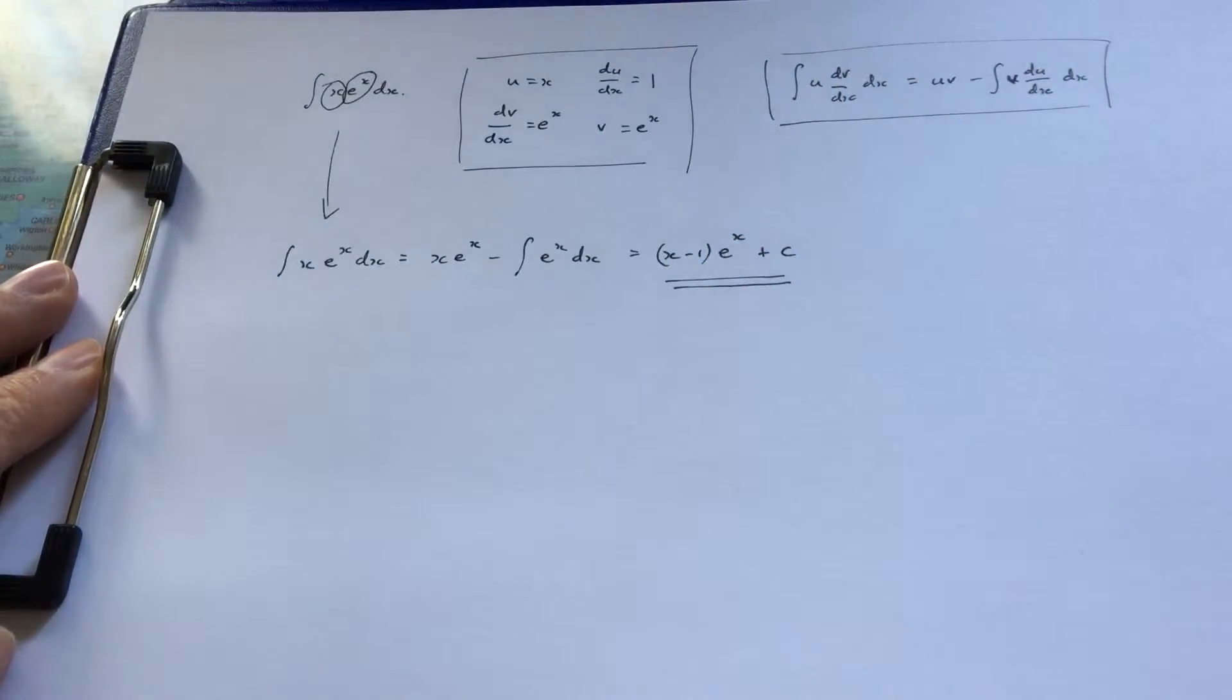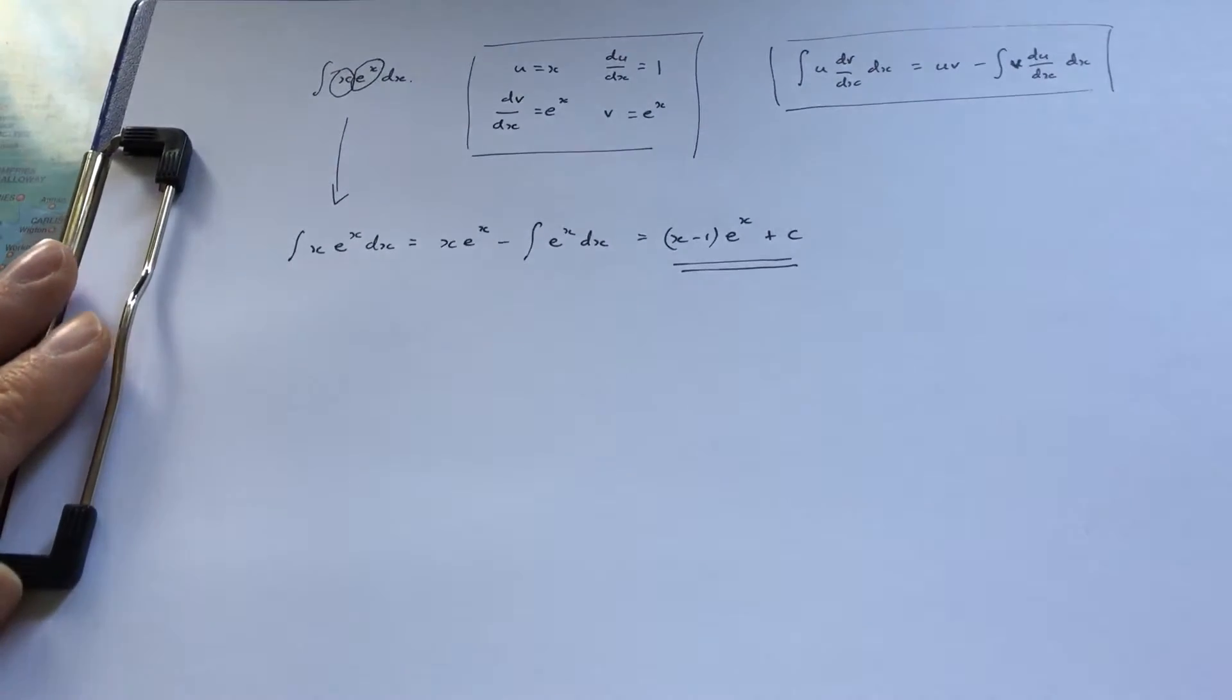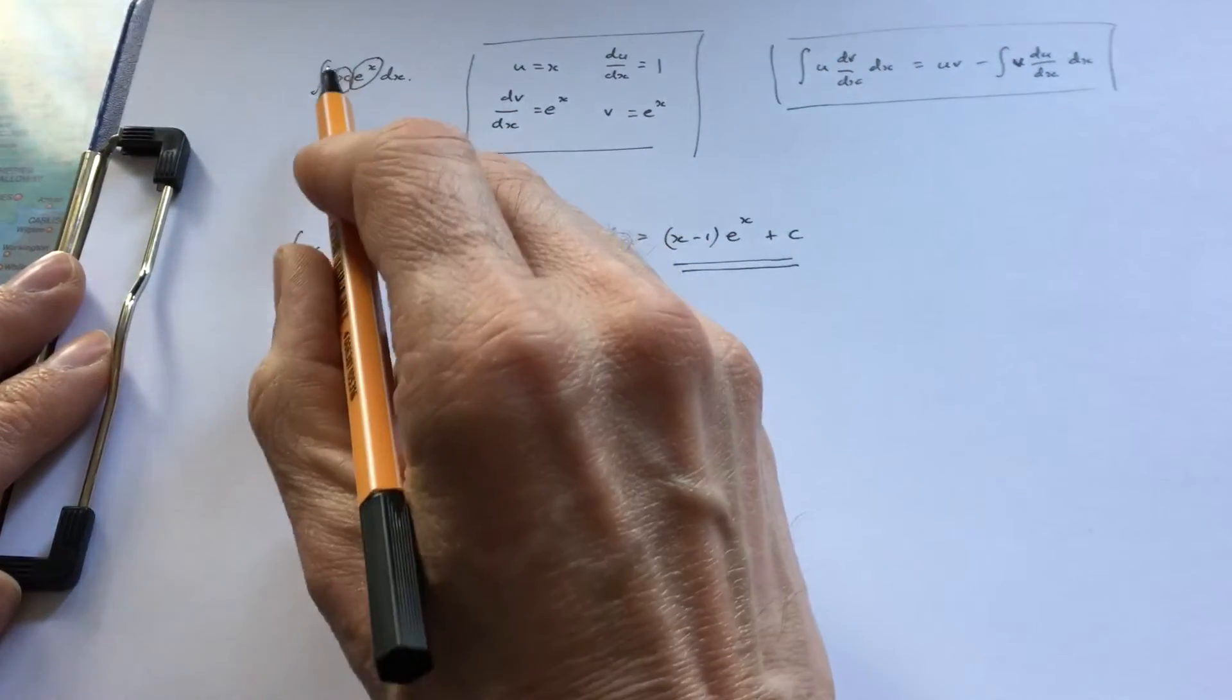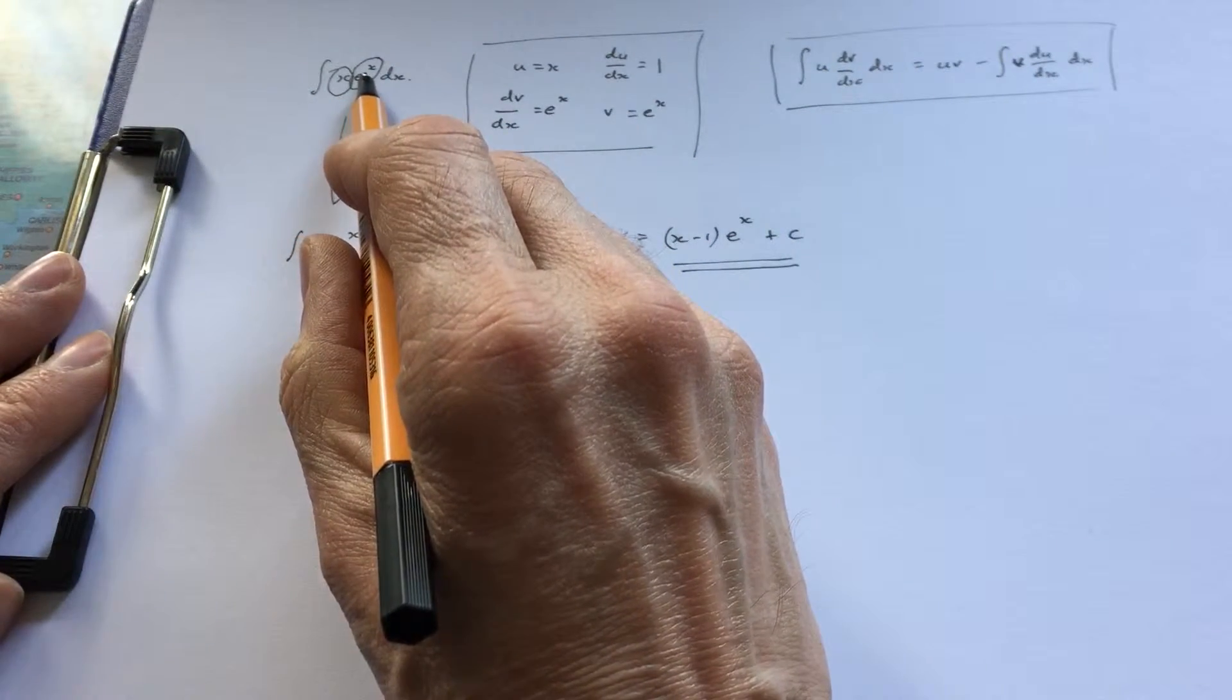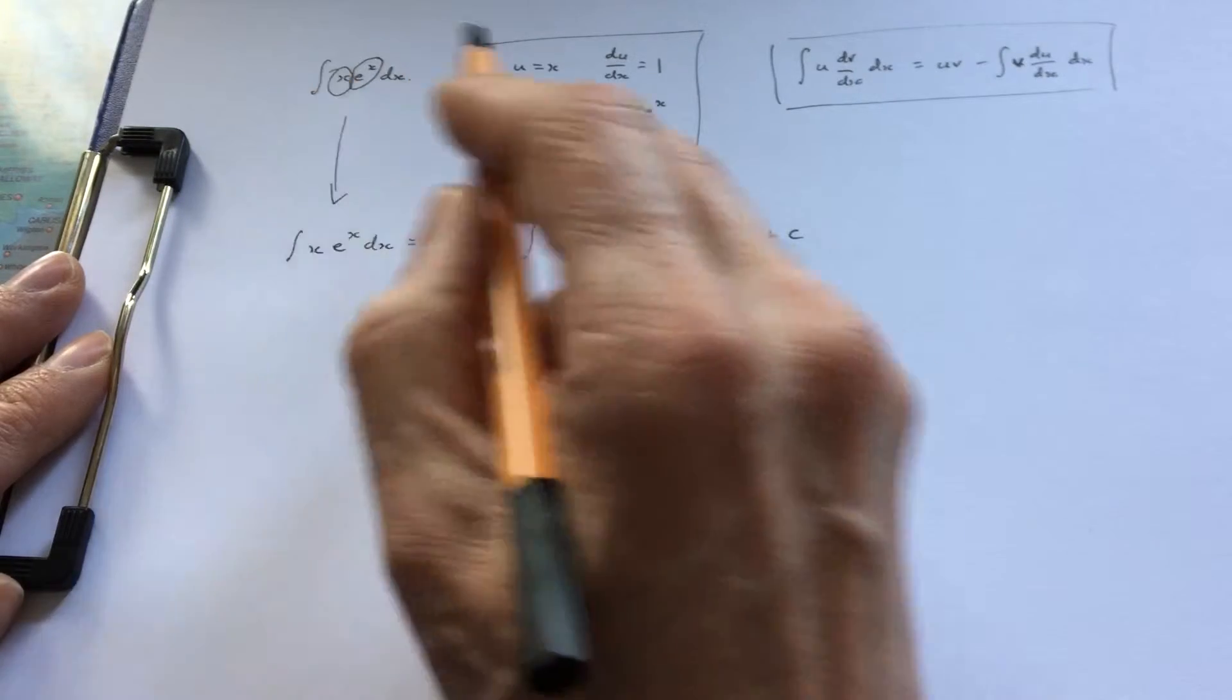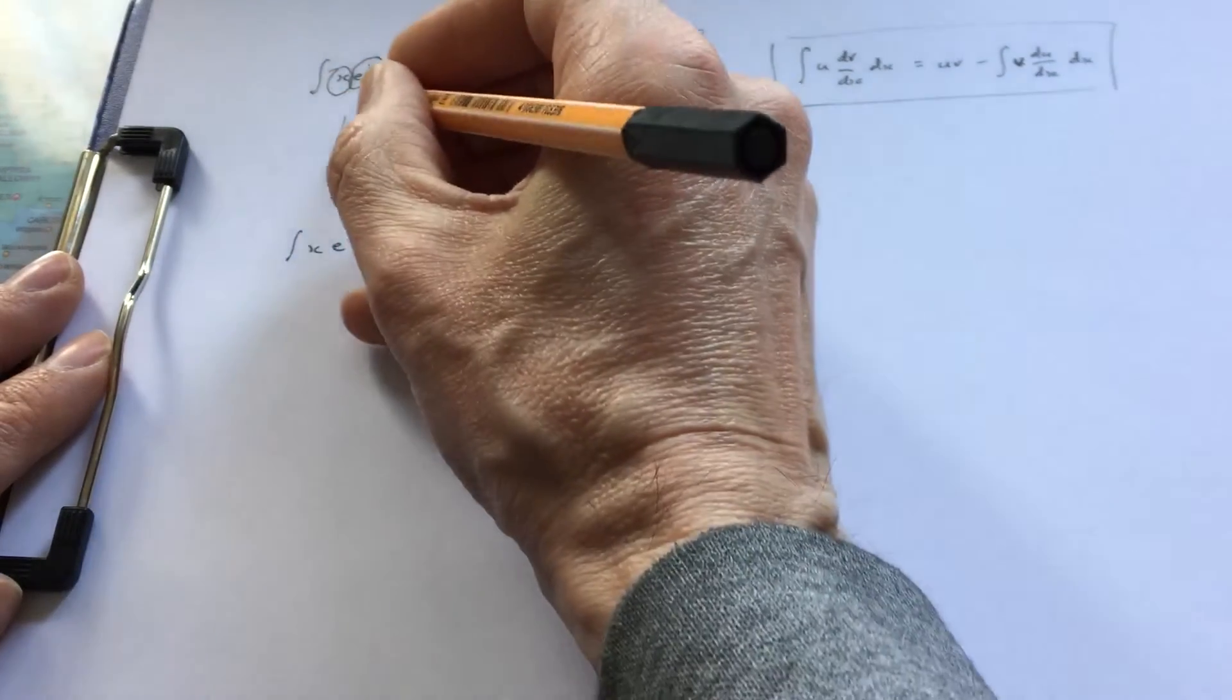I mentioned earlier what would happen if you tried doing this the other way by taking u = e^x and dv/dx = x. Let's try that and see if it works.